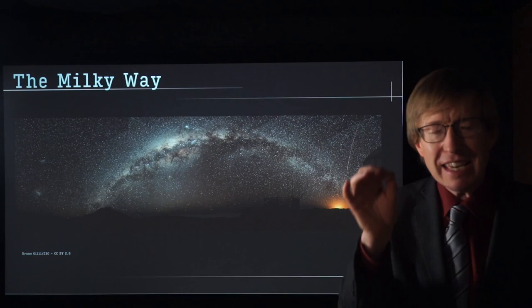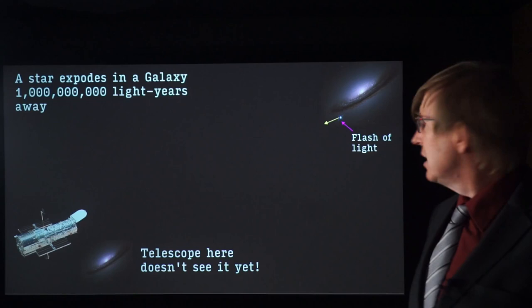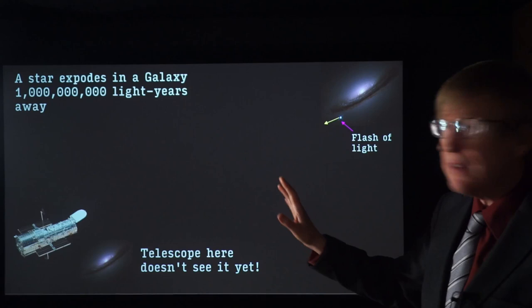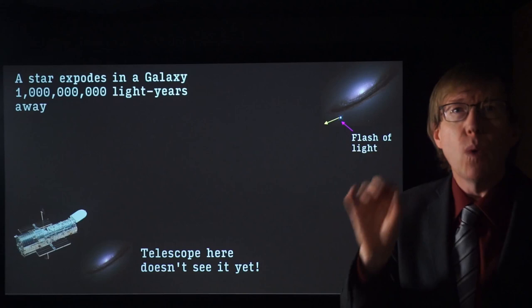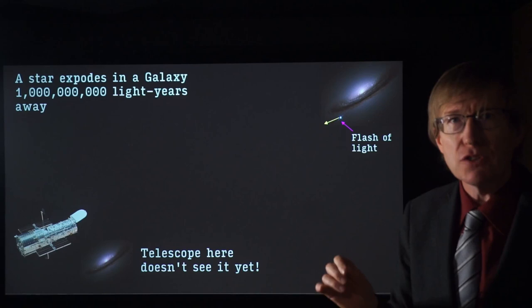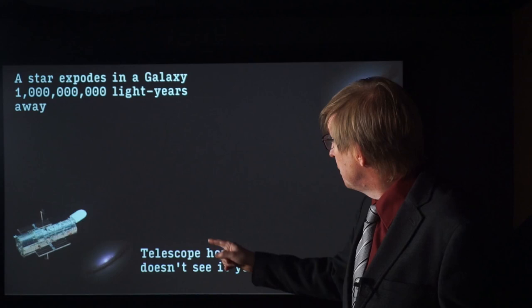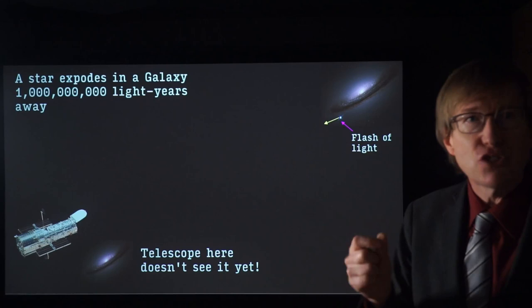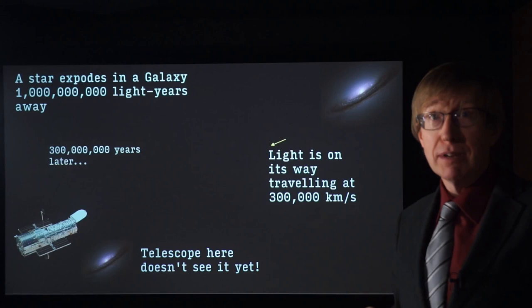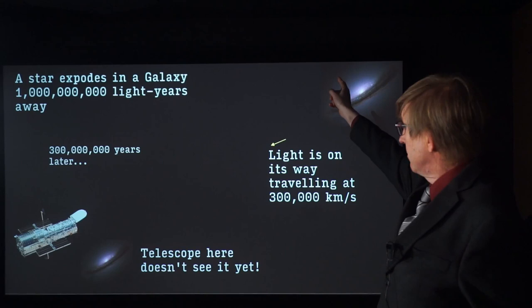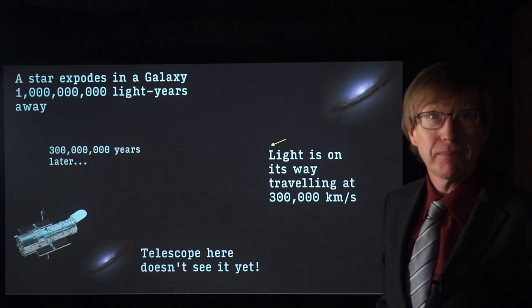What this means is something really magical — we can see into the past. Imagine in some distant galaxy, a star explodes and produces a flash of light. This explosion is called a supernova. Let's imagine this happened one billion light years away — there's a flash of light. Orbiting the Earth is the Hubble Space Telescope, which has taken a picture of this galaxy. The telescope does not see the explosion because the light has not gotten here yet. So we wait — let's wait 300 million years. The explosion is all gone, it's done, but we still don't see it because the light is still on its way.